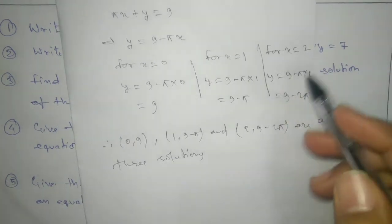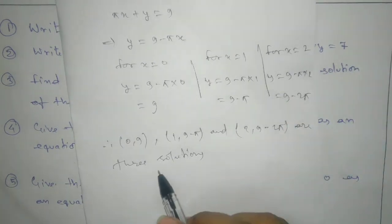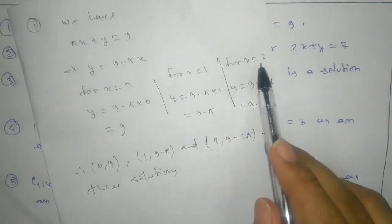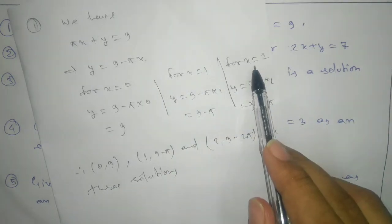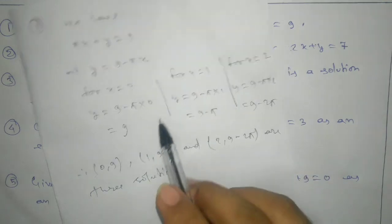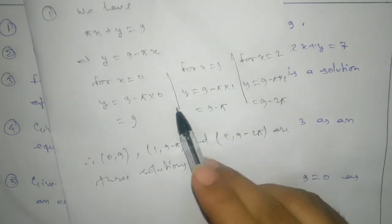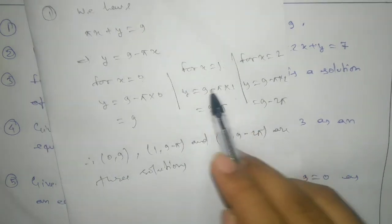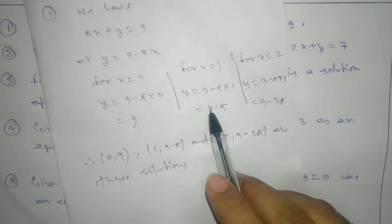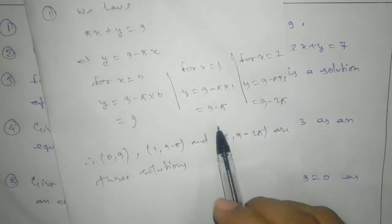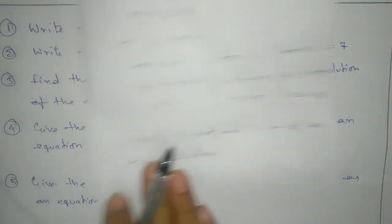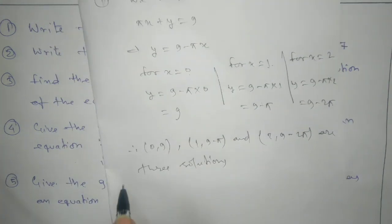If they are asking for 4 solutions, we can take x equals to minus 1 also. Here I have taken all positive values, but it is not compulsory to take positive. We can take minus 1 as well. If we take minus 1, minus minus becomes plus, and we will get 9 plus π. So we can take that too — no problem.